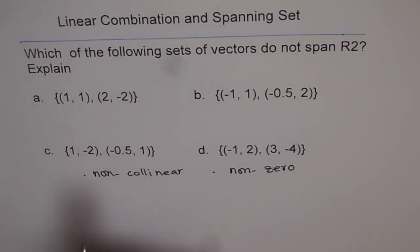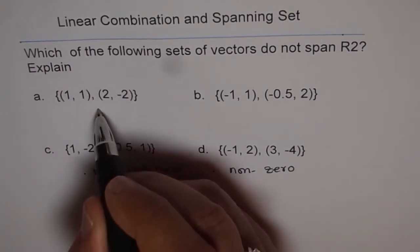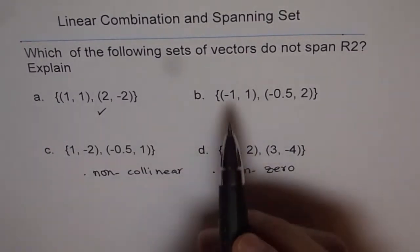For option (a), (1,1) and (2,-2): if I multiply (1,1) by 2, I get (2,2). So this one is okay, it can span.